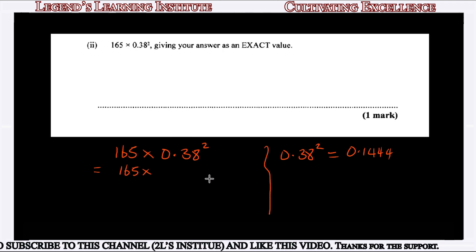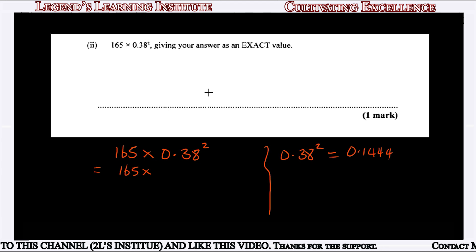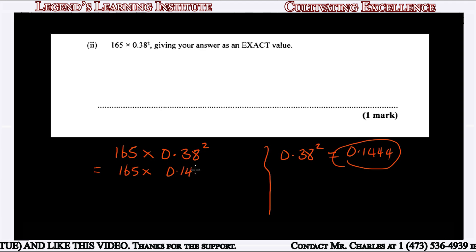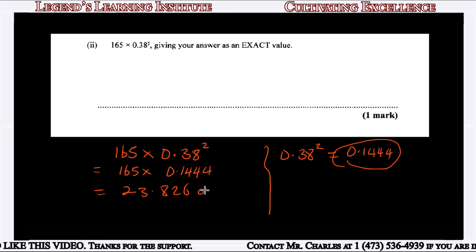For part 1A(ii), we are asked to calculate the exact value of 165 multiplied by the square of 0.38. The square of 0.38 is 0.1444. Multiplying 0.1444 by 165, we get 23.826, which is our answer as an exact value.